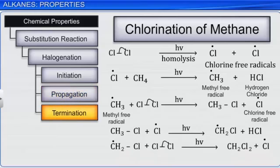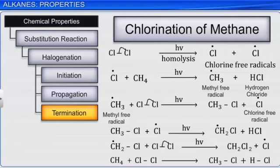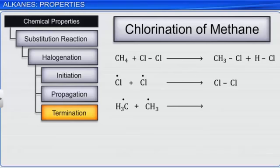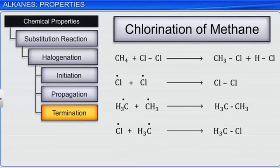During termination, the reaction stops either because all the reactants have been consumed, or because of the following possible chain termination reactions: two chlorine free radicals combine to form a chlorine molecule; two methyl free radicals combine to form ethane; or a chlorine free radical and a methyl free radical combine to form chloromethane. Thus, in the chlorination of methane, ethane is obtained as a by-product.